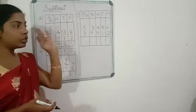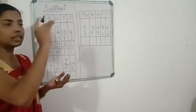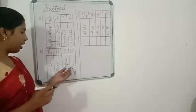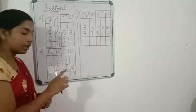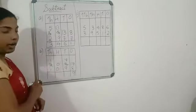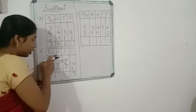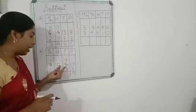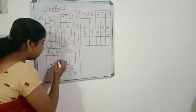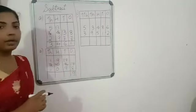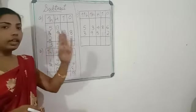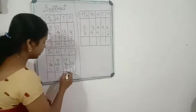Seventeen minus eight: after eight, nine, ten, eleven, twelve, thirteen, fourteen, fifteen, sixteen, seventeen — that is nine. Now seven minus nine is not possible. The nearer place also has nothing, so we borrow from the next place. The two becomes one, and the hundreds place becomes ten. We take one from here and give to seven, so the ten becomes nine and the seven becomes seventeen. Seventeen minus nine: after nine, ten, eleven, twelve, thirteen, fourteen, fifteen, sixteen, seventeen — that is eight.